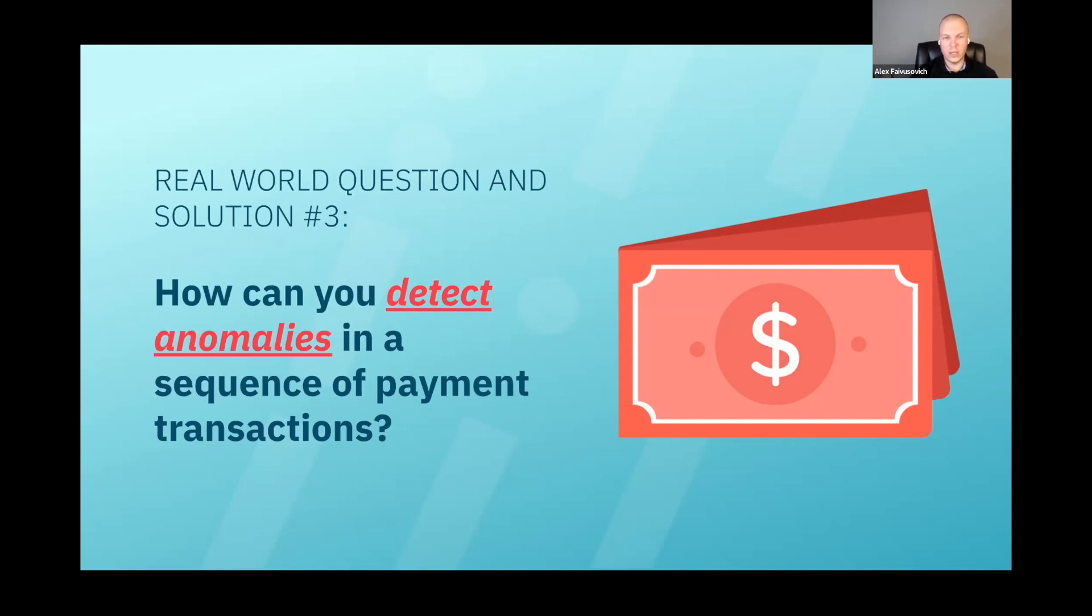So for example, if you're trying to flag a customer who suddenly starts to deposit way too much cash, injecting cash into the system, it's very easy to use Unit21 to understand how historically he was doing that.